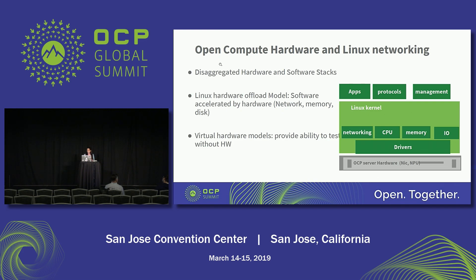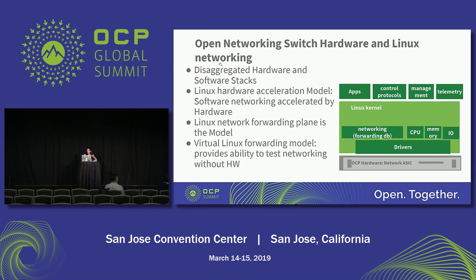For servers, the first model is disaggregation — you run Linux and use Linux APIs and drivers. Every hardware that comes today has a driver for Linux. You use the Linux hardware offload model and also virtual hardware models that we test with Linux on the server side — networking especially. You have VirtIO and many other virtual network hardware which you can test without having real hardware. So you flip around the same picture: instead of a NIC and NPU, you have the network switch ASICs. You can run the same Linux, the same routing stack, same neighbor table, same ARP cache on your switch ASIC. The Linux network forwarding model becomes the model for testing your network deployments — that's the key advantage you get from this model.